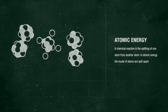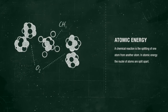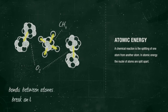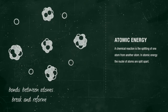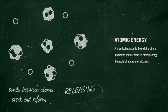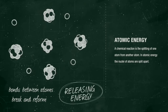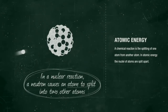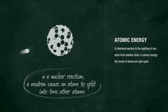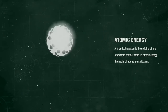When a nucleus splits, a tremendous amount of energy is released and new, lighter elements are created. In addition to the release of energy, several more neutrons come out of the reaction. The release of a large amount of energy in many, many instances of fission could result in a massive explosion.